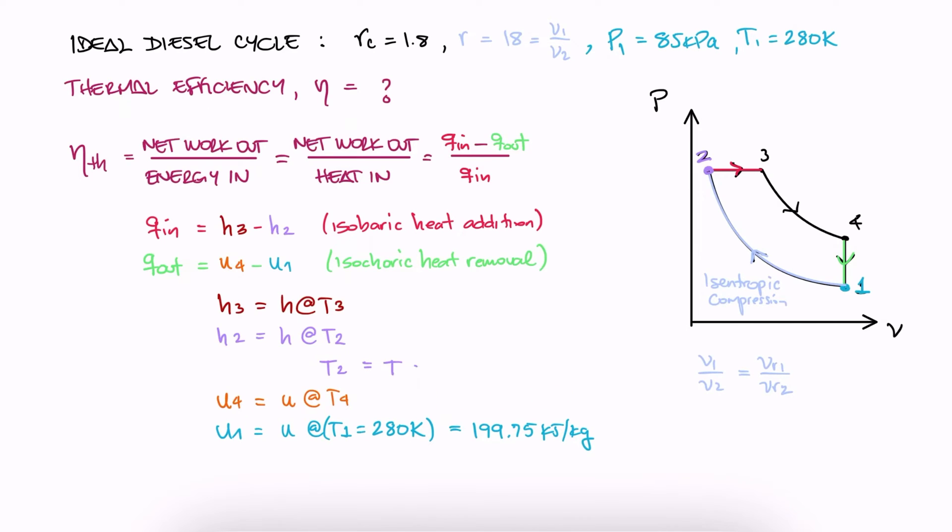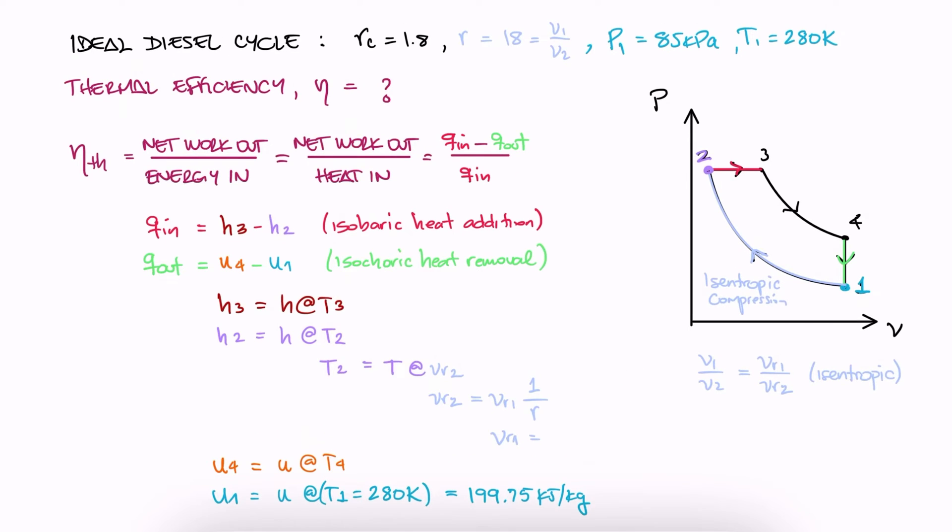T2 is whatever temperature corresponds to Vr2, and since V2 over V1 is equal to Vr2 over Vr1, all we need to find is Vr1 to calculate Vr2.